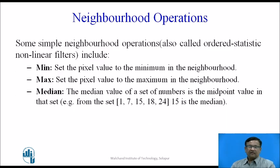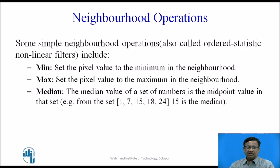Some simple neighborhood operations, also called ordered statistics nonlinear filters, include: Min, which sets the pixel value to the minimum in the neighborhood; Max, which sets the pixel value to the maximum in the neighborhood; and Median, which sets the pixel to the midpoint value in that set.